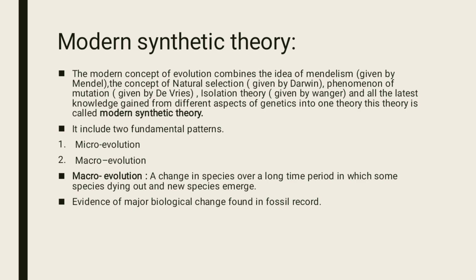It includes two fundamental patterns: micro-evolution and macro-evolution. Macro-evolution is a change in species over a long time period in which some species die out and new species emerge. Evidence of major biological change is found in the fossil record, which shows that a species has evolved and changed over time.